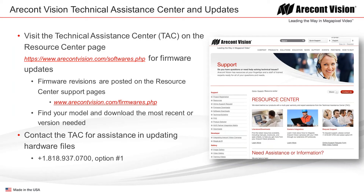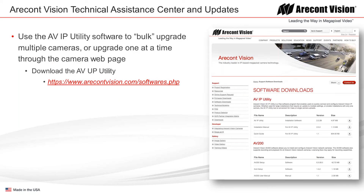Firmware updates are available on our website. Under the top menu, you can either go to the Support menu and select firmware downloads directly, or go to the Resource Center where you'll see firmware downloads on the left side menu. We typically post recent firmware updates along with several previous versions, so if you need to download older versions for a compatibility reason, that's usually available — you can go forward or backwards as needed. Also linked on that page is the AVIP utility, our software for doing bulk upgrades for multiple cameras on site. You can also find it through Support and Software Downloads or the Resource Center.